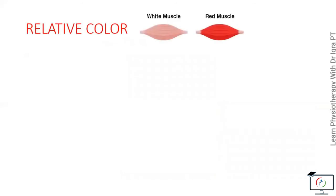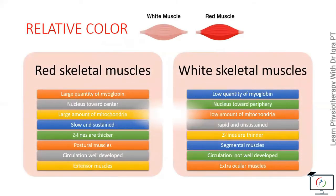Relative to color, they are called white and red muscle fibers. Red skeletal muscles have a large quantity of myoglobin while white skeletal muscles have a low quantity of myoglobin. According to nucleus position, the nucleus is towards the center in the red skeletal muscle while it is in the periphery in the white skeletal muscle.